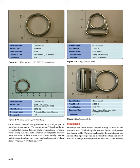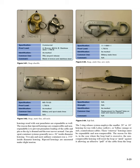Housings: Housings are spiral wound flexible tubing, almost all of stainless steel. Their design is to route, house, and protect the ripcord cable. They are anchored to the container at one end and the ripcord pocket or mount at the other. Most ripcord housings are compressible only, but some military housings used with seat parachutes are expandable as well. The reason ripcord housings are compressible and non-expandable is to prevent premature loading of the cable and pin as the rig is donned and the user moves around. One-pin sport container systems generally use a 0.26-inch inside diameter housing; two-pin and most military containers use a 0.375-inch inside diameter housing. Ripcord housings are measured under slight tension. The three-ring release system employs the smaller 0.20 or 0.18-inch housing for use with Lowland (yellow) or Teflon (orange or red) coated release cables. These cutaway housings must be expandable and non-compressible, so that in the case where the loop load is excessive, the non-compressible housing will resist the loop, allowing an effective pull of the cable — thus the term push-pull system.